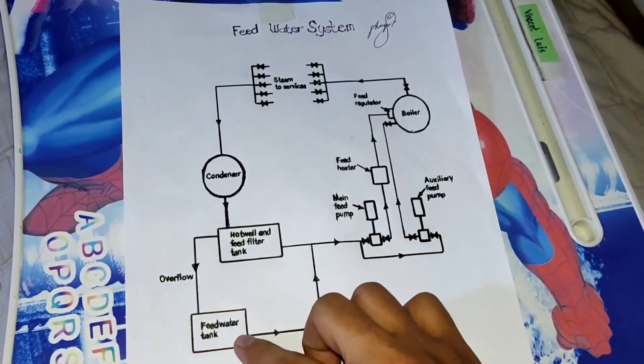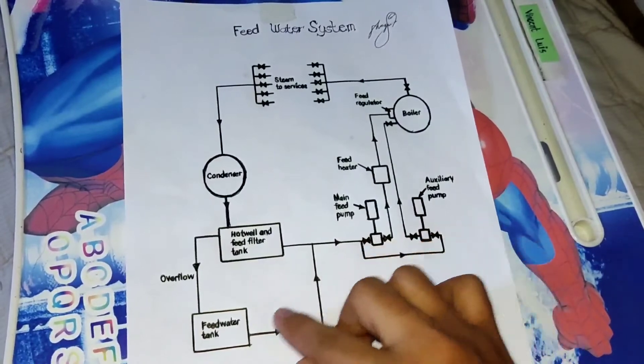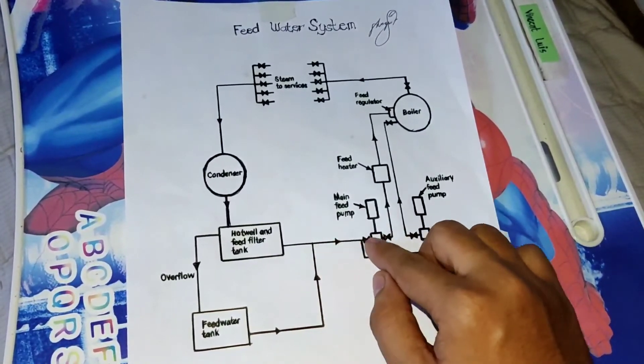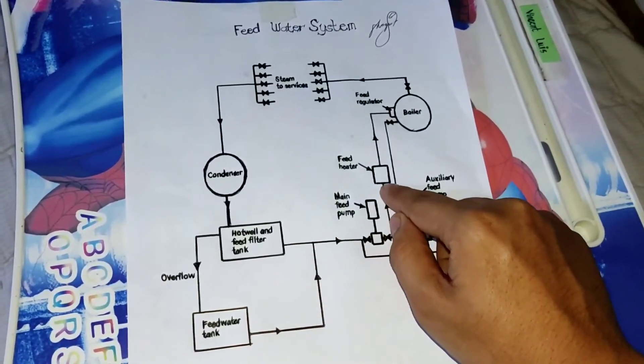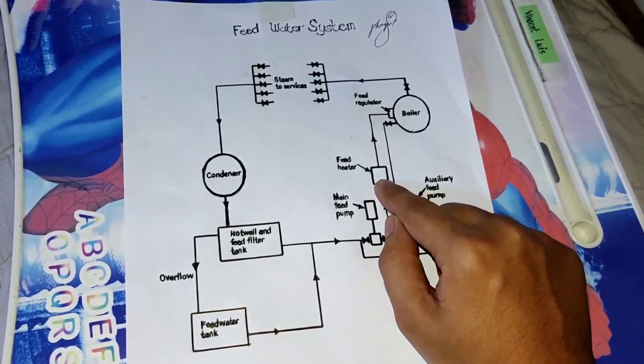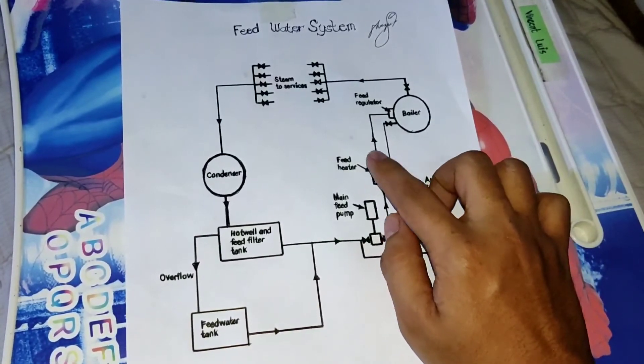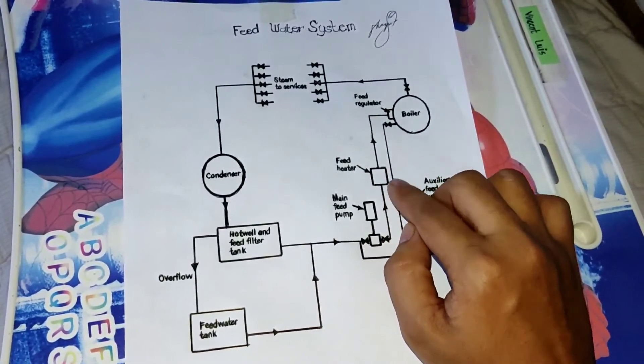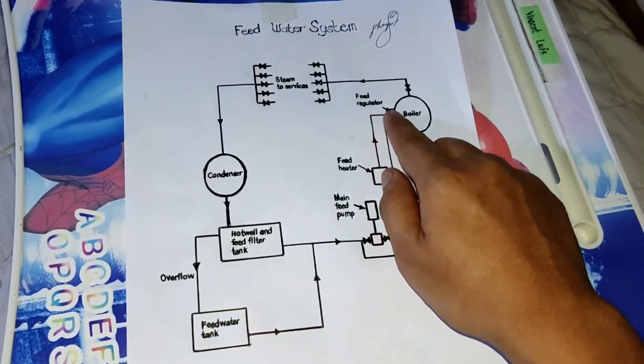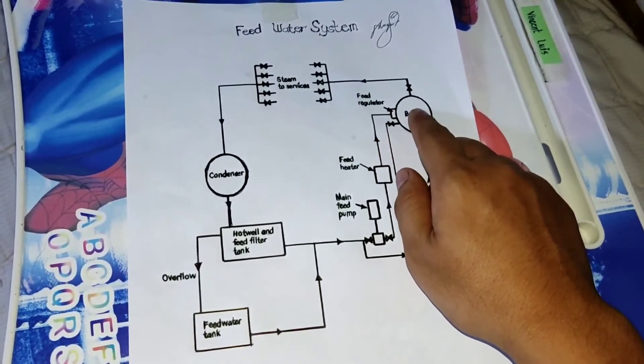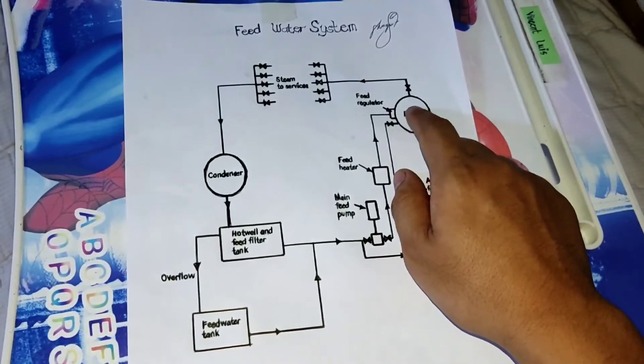The main feed pump will pump out the liquid and the liquid will flow through the pipe and proceed to the feed heater. So the purpose of feed heater is for heating the feed water before it enters the boiler to minimize the fuel oil consumption.